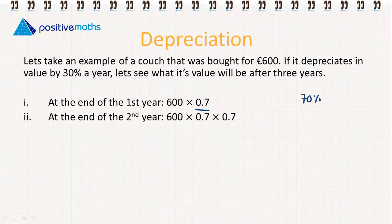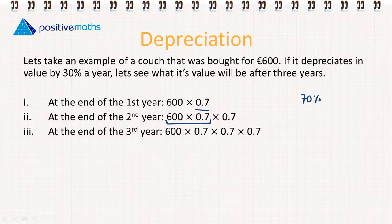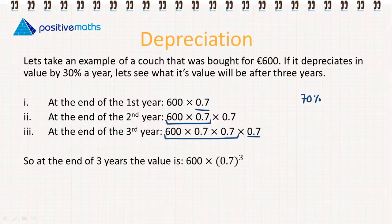At the end of the second year, we're going to find 70% of the value from the first year, so it's 600 × 0.7 × 0.7. At the end of the third year, we're finding 70% of the value from the second year, so 600 × 0.7 × 0.7 × 0.7.